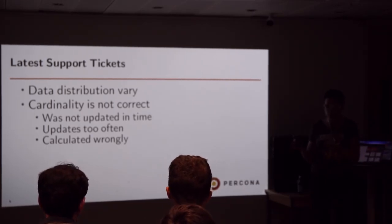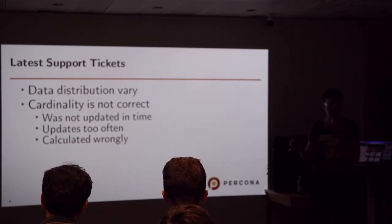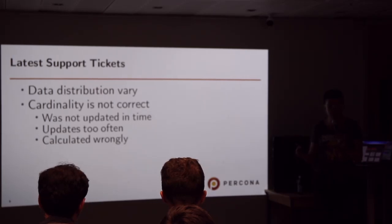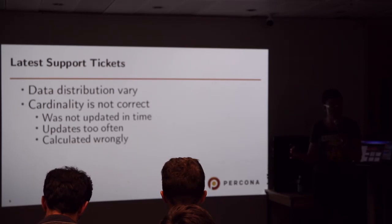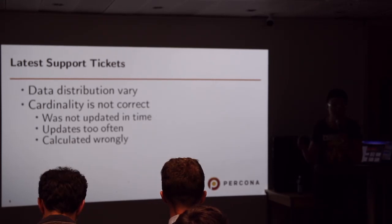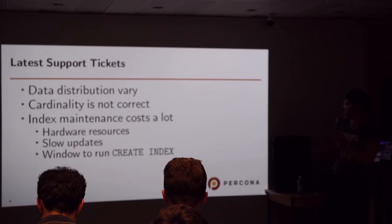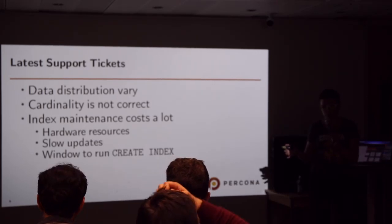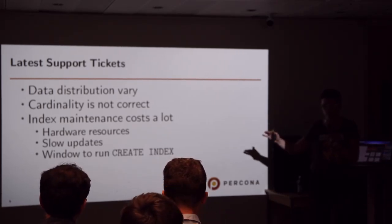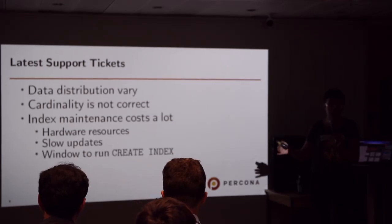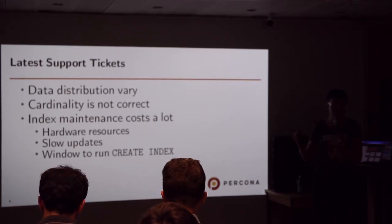Cardinality is sometimes not correct because it's maintained by the storage engine and isn't always updated in time. If the table is big, recalculation may take a long time. Even when recalculated, some people prefer to keep it more persistent because data continuously changes — statistics can be recalculated, then another change happens and it's still wrong. Index maintenance also costs a lot: it takes space on disk, and every update requires updating the index, which speeds up your SELECTs but slows down your INSERTs.